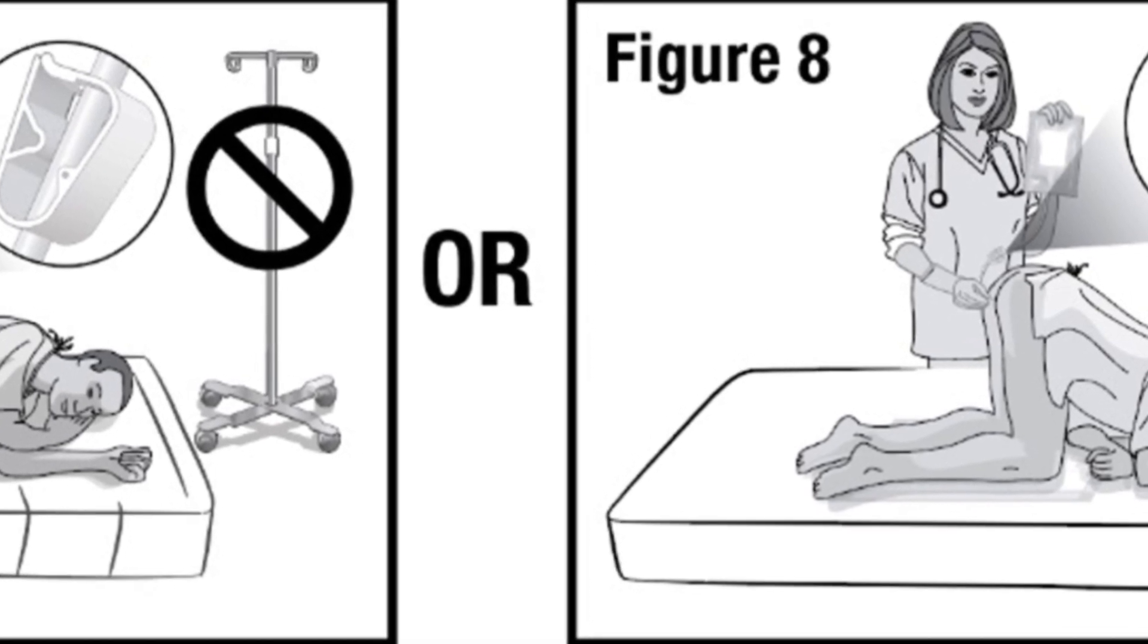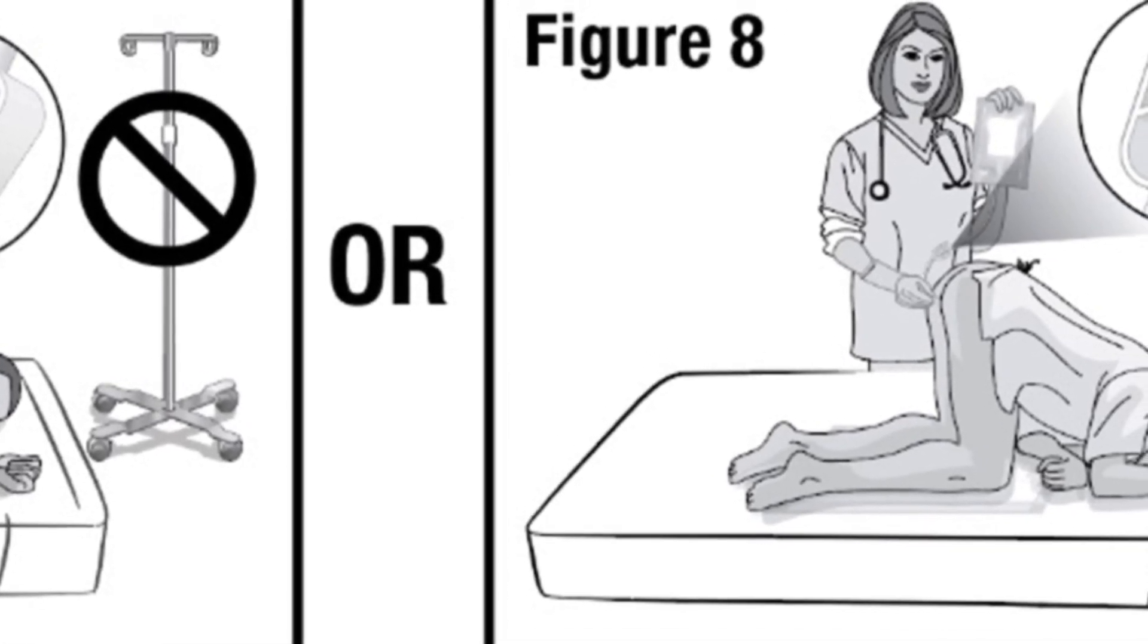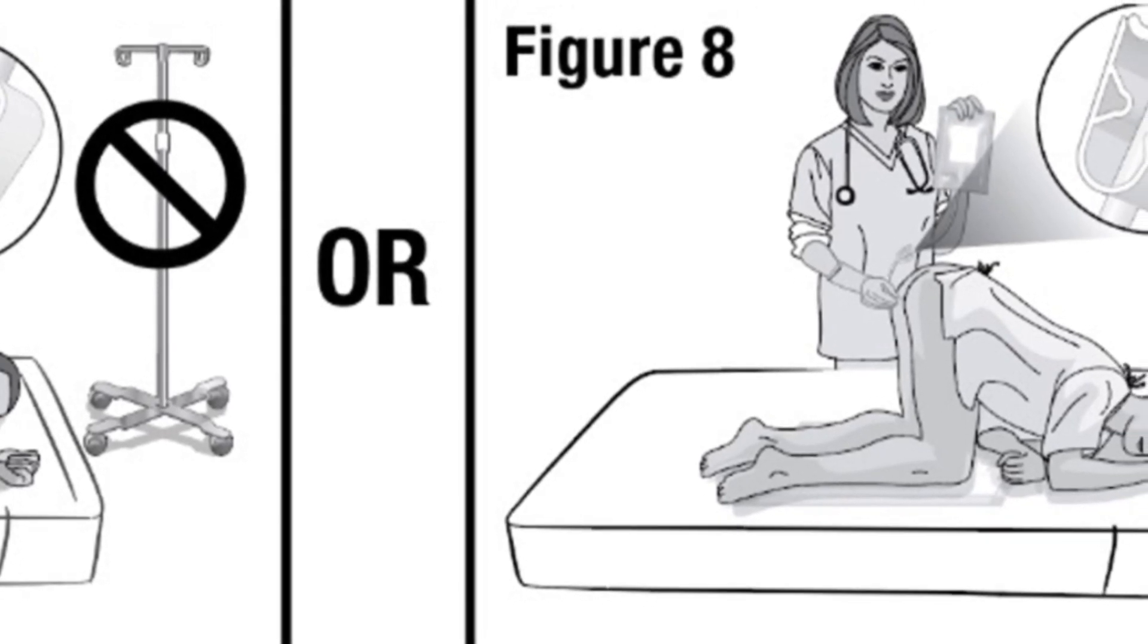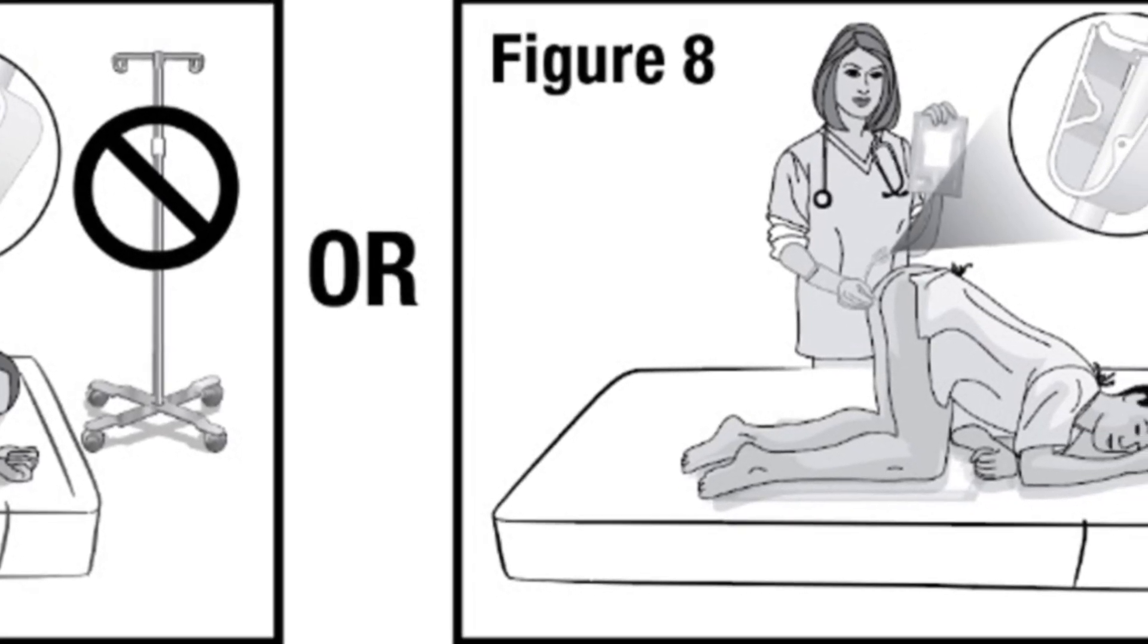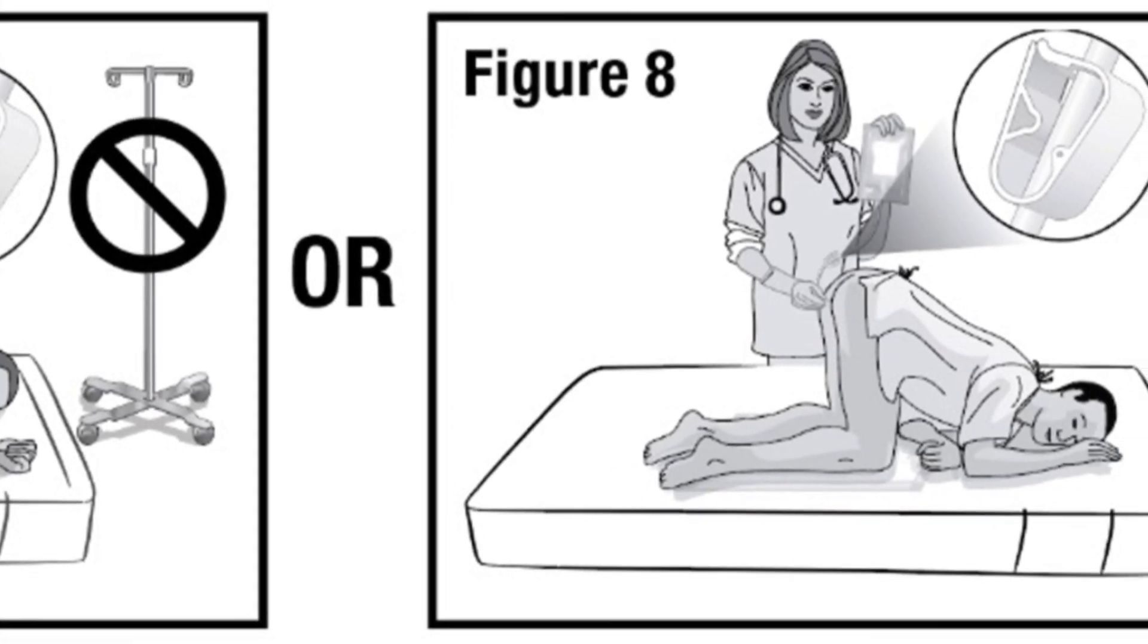Hold the administration tube in place with one hand for the entire procedure to maintain the tube position in the rectum. With the other hand, open the pinch clamp on the administration tube, and then gradually raise the bag to allow delivery of Rebiota via gravity flow.